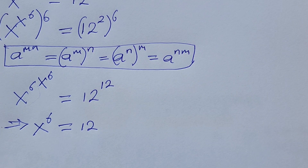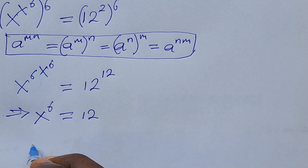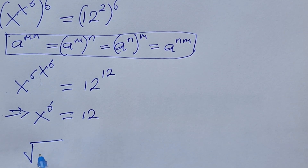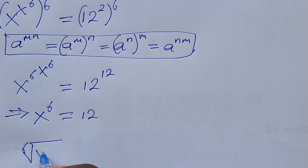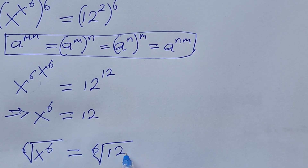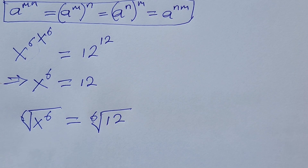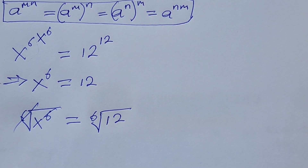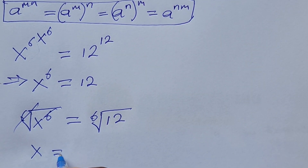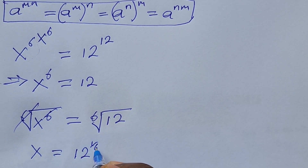At this point, we take the sixth root of both sides. The sixth root of x to the power of 6 equals the sixth root of 12 — whatever we do to the left-hand side we must do to the right-hand side. This gives us x equals 12 to the power of 1 over 6.